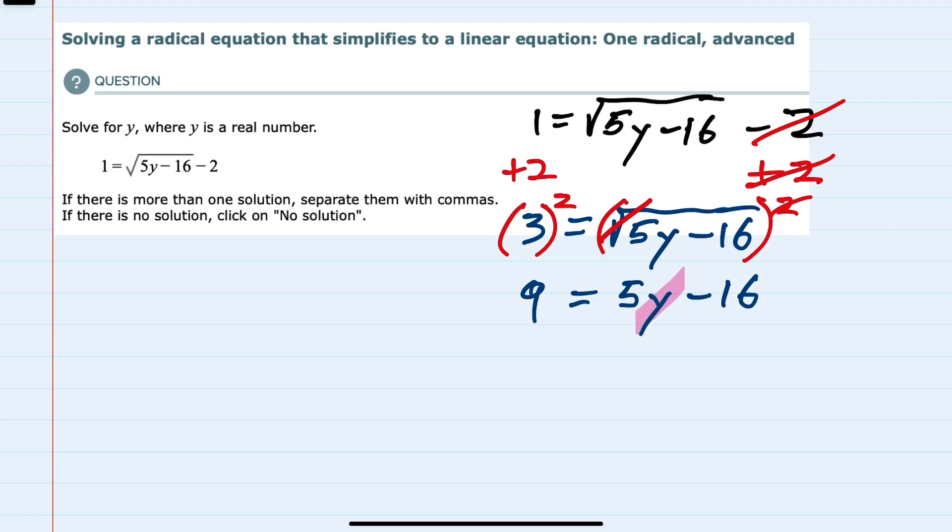And to continue solving for y, I would first add 16 to both sides to get that 5y by itself. That gives me 5y on the right and 25 on the left, and then divide both sides by 5.